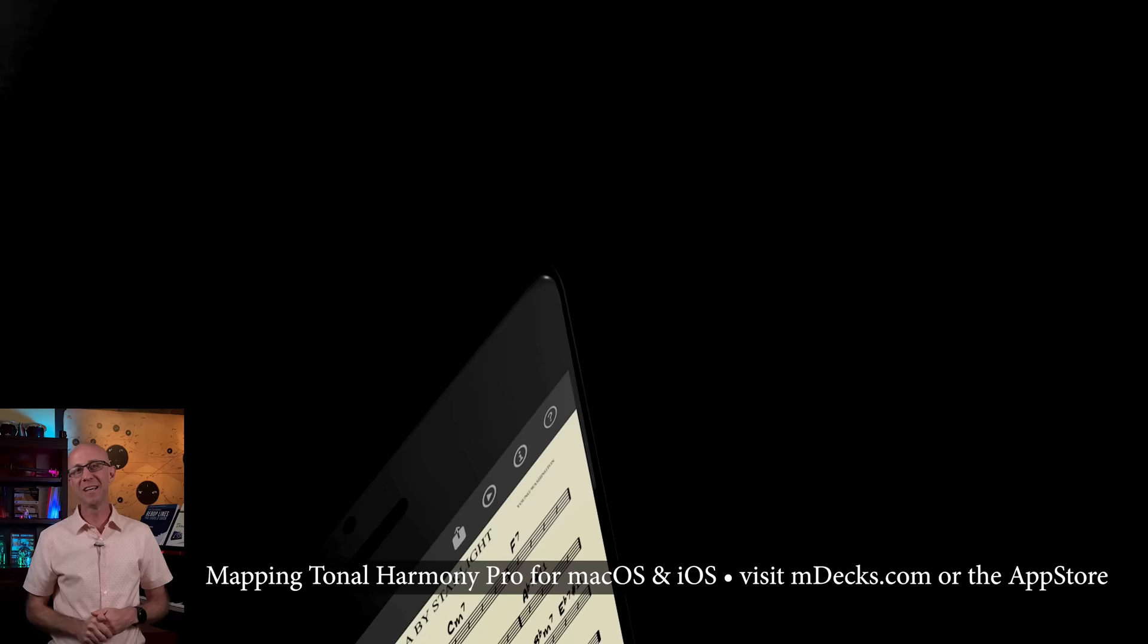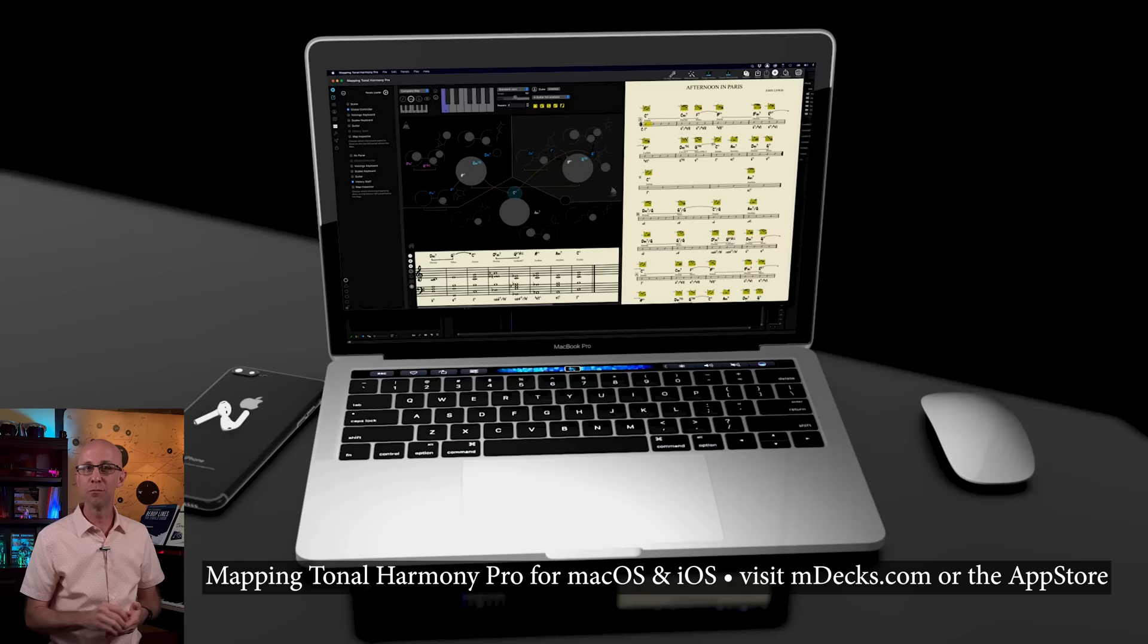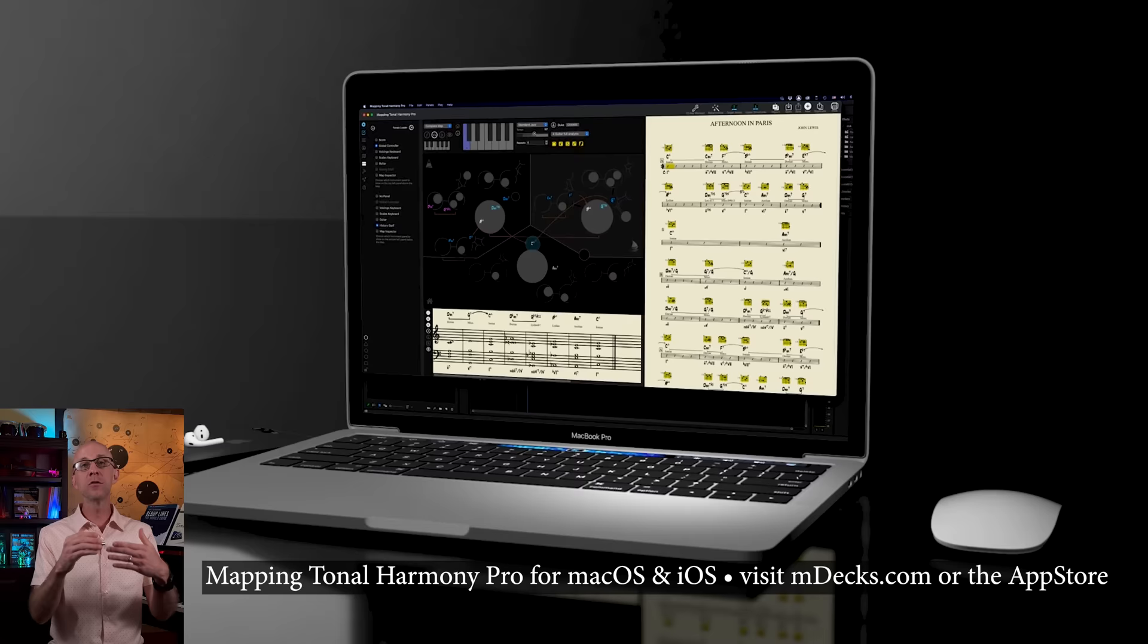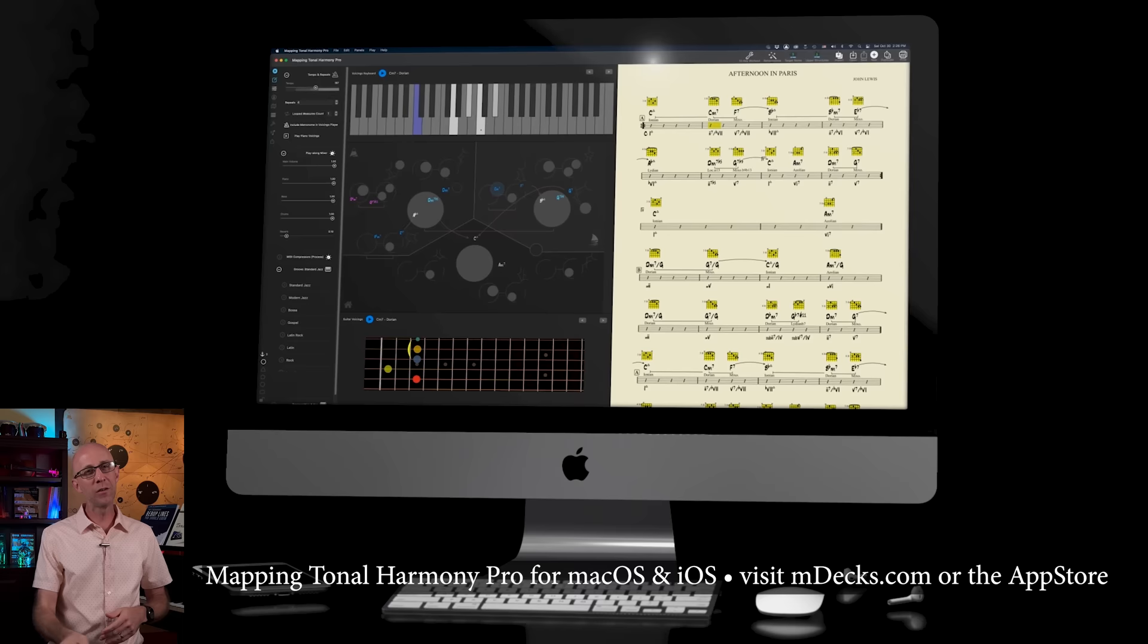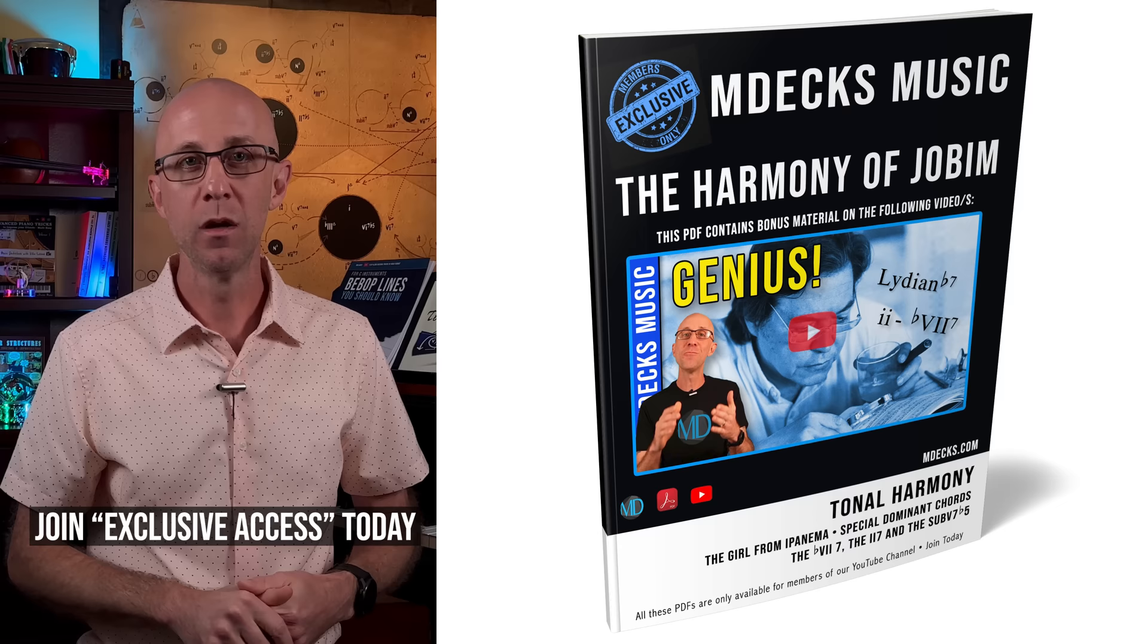So there you have it, the genius behind Antonio Carlos Jobim's harmonic progressions. If you're fascinated by the intricate details of harmony in music and want to explore it further, I highly recommend getting the Mapping Tonal Harmony Pro app available for Mac, iPhone, and iPad. With its comprehensive features and tools, you can dive deeply into the world of tonal harmony and analyze any piece of music that you want. So why not give it a try and see where your musical curiosity takes you.